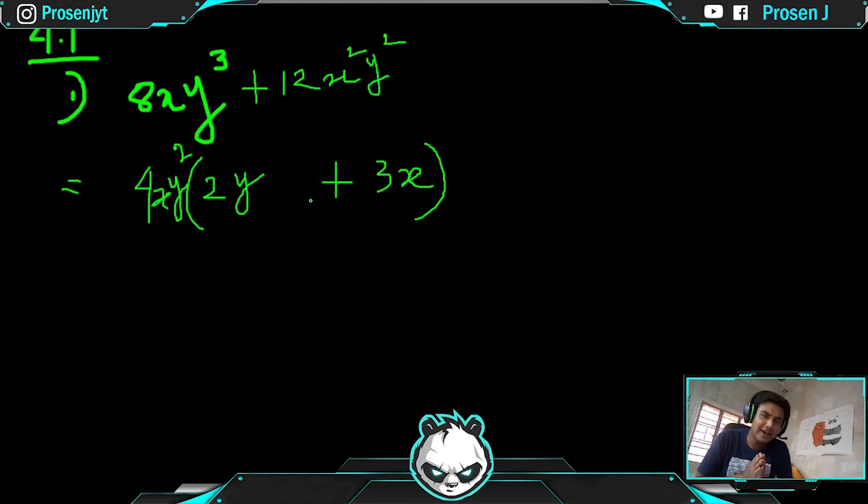Finally our answer will look like 4xy² times (2y + 3x), and that is called factorization. It's all about taking common factors out from the given equation. Whenever you multiply it again, 4xy² with 2y and 3x, you'll get the previous one. So expansion and factorization are just reverse of each other.